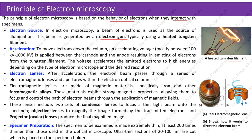Acceleration: to move electrons down the column, an accelerating voltage, mostly between 100 kV to 1000 kV, is applied between the cathode and the anode, resulting in emitting of electrons from the tungsten filament. The voltage accelerates the emitted electrons to high energies depending on the type of electron microscope and the desired resolution.